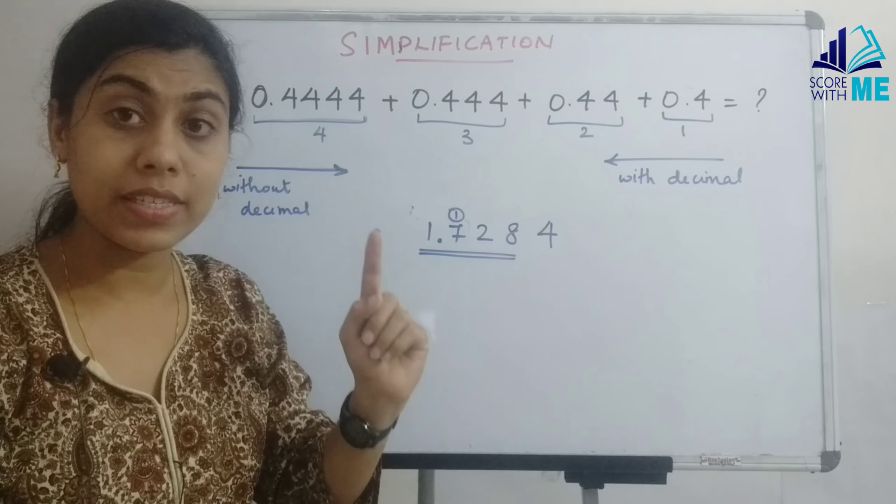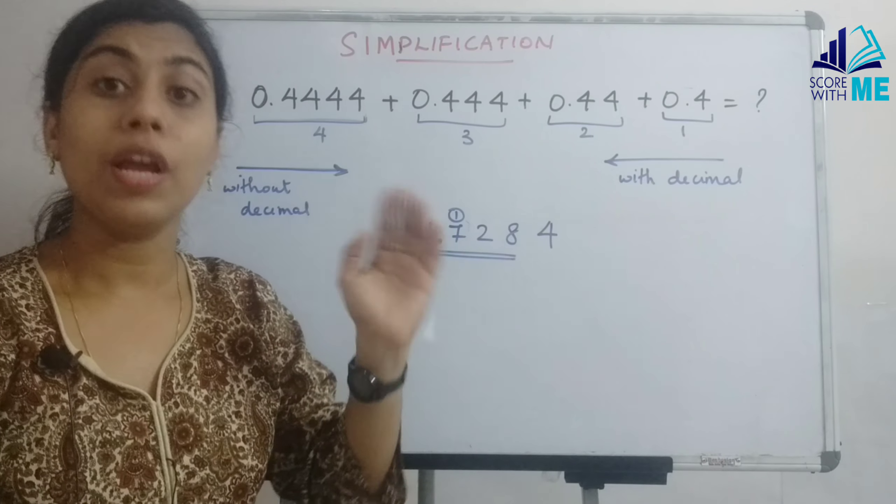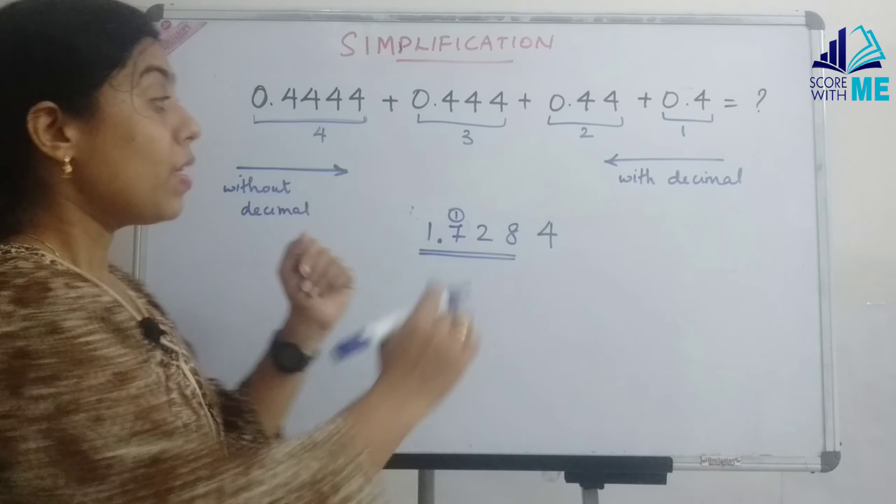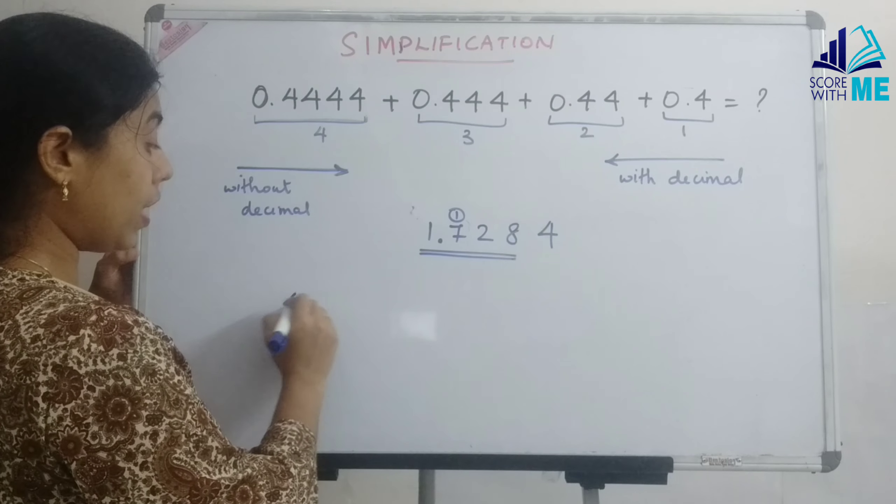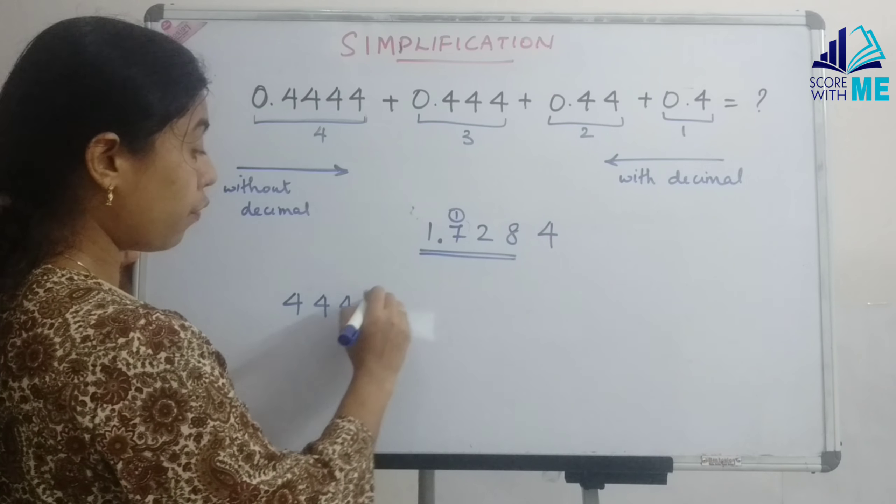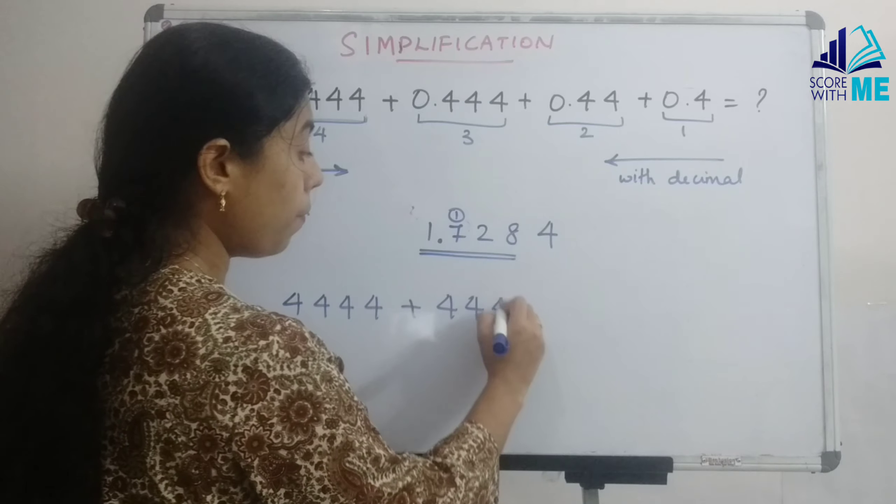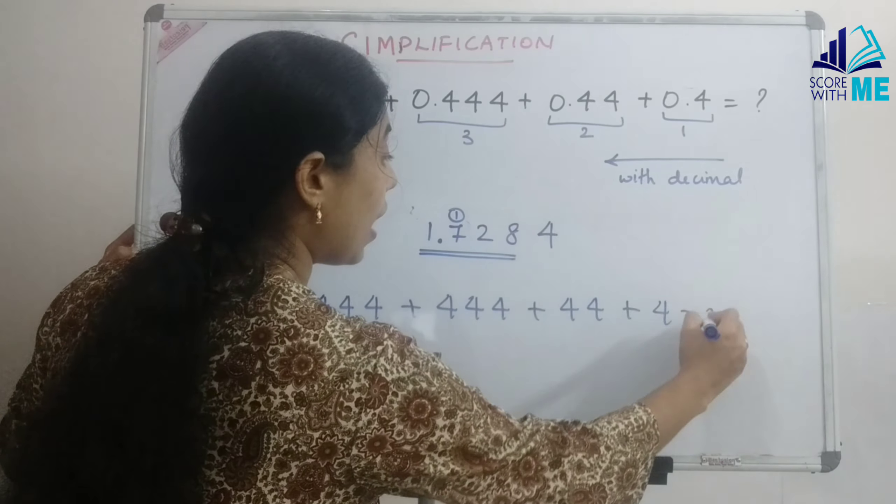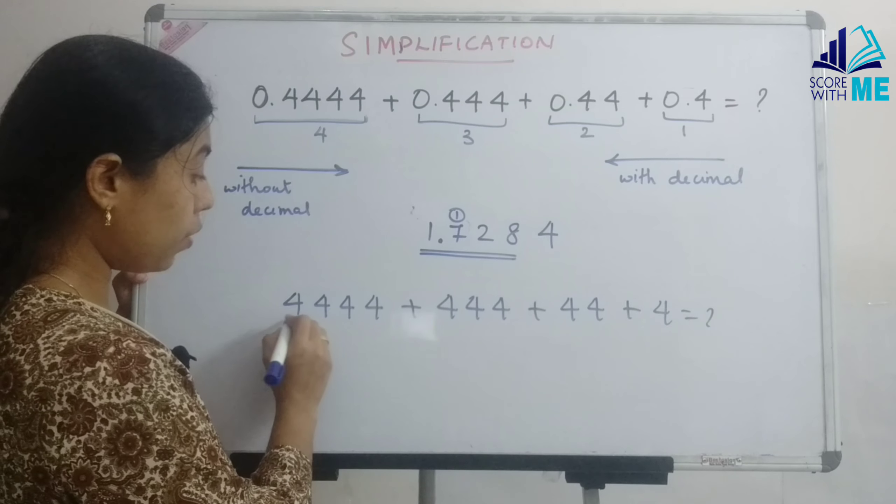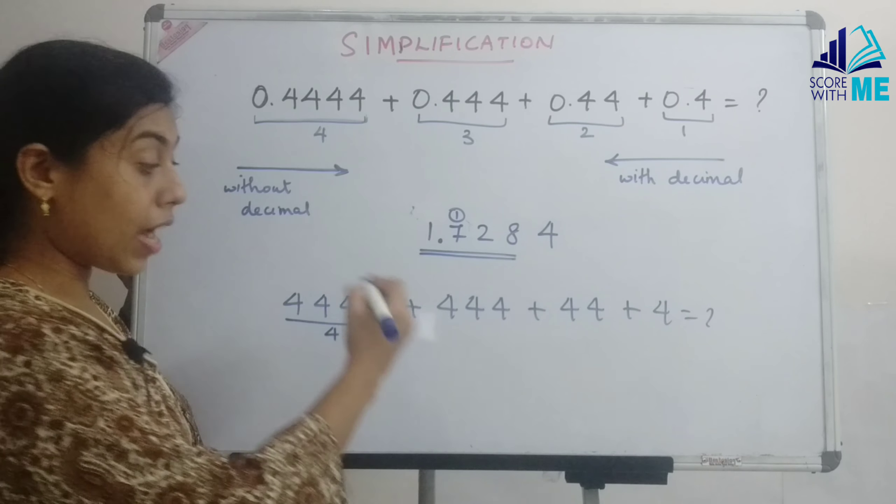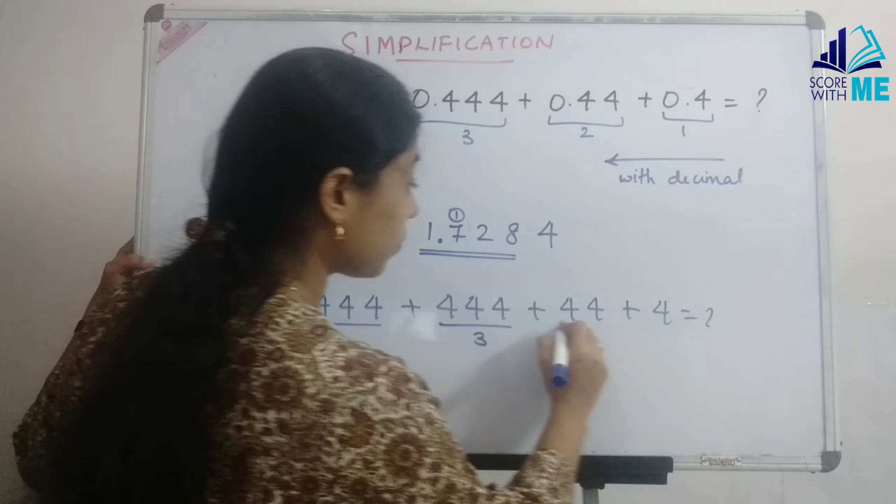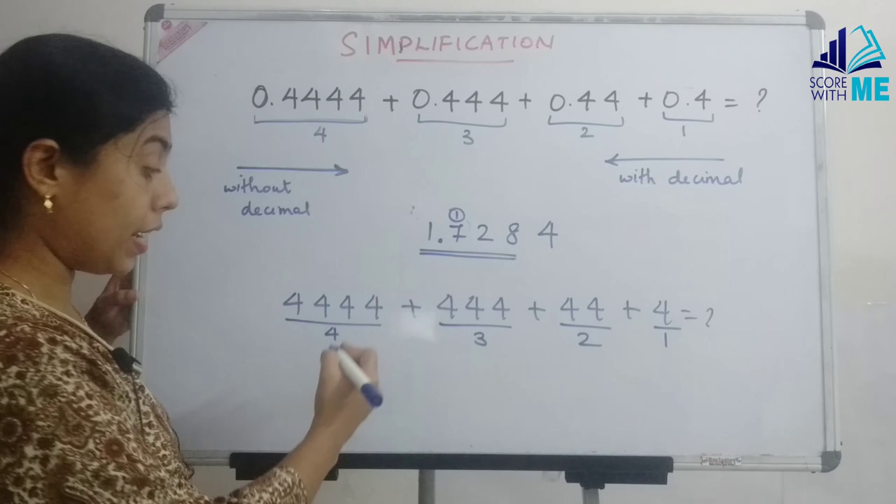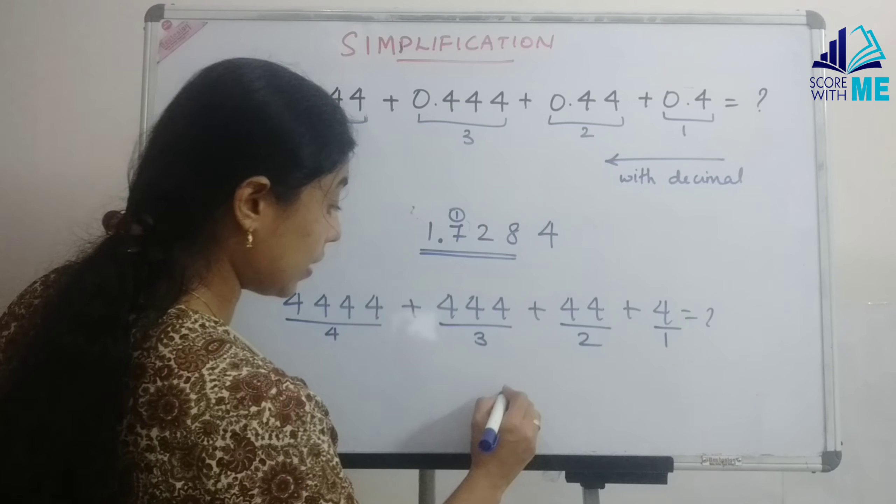Remember, process is same. Process did not change. But where did we have a change? The direction in which we started writing our number. So without the decimal, when we had like 4 times 4 plus 3 times 4 plus 2 times 4 and a 4, when we had a question like this, what did we do? We counted 4. So here we started our product from, when this was our case, we started writing our product from this end.